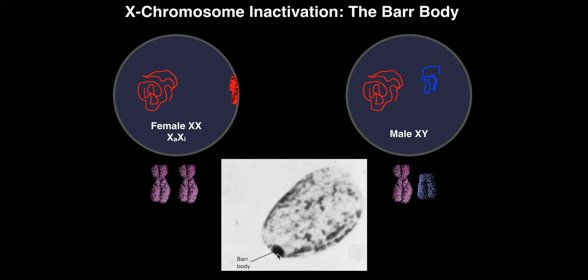Here's a micrograph image of a nucleus showing a very dark spot on one wall — this is the bar body, the inactivated X chromosome. It's still the X chromosome, just modified and condensed so that no genes on it are generally expressed; only genes on the active chromatin X chromosome are expressed. We denote this with a subscript 'a' for the activated X and subscript 'i' for the inactivated X, where X-sub-i denotes the bar body.